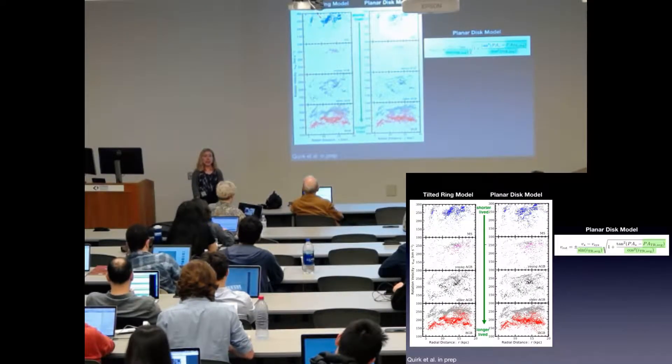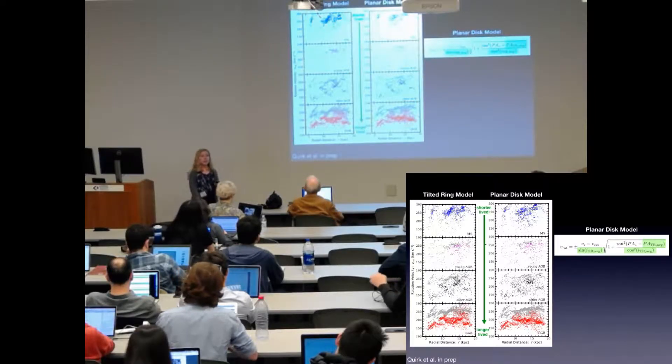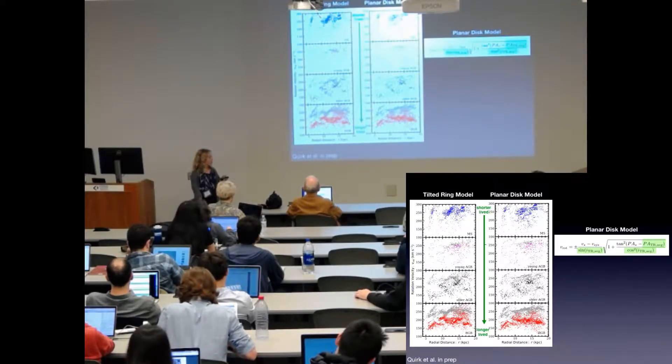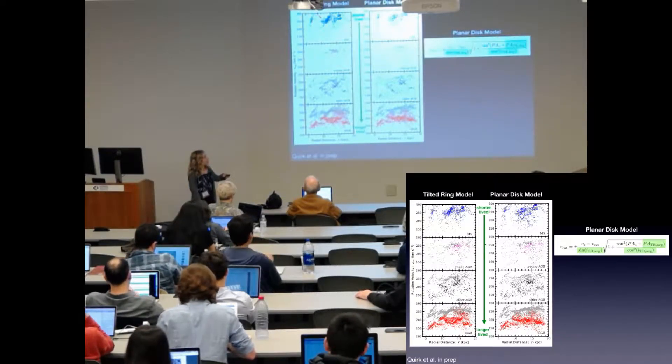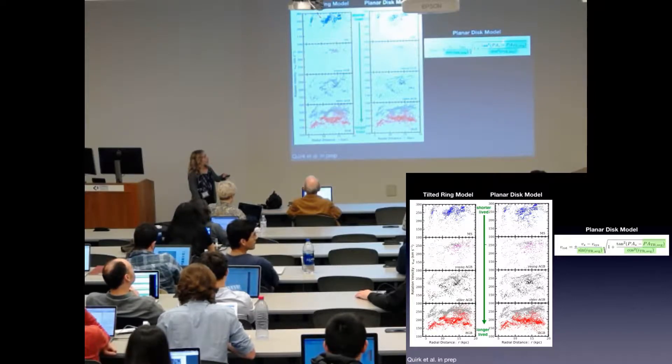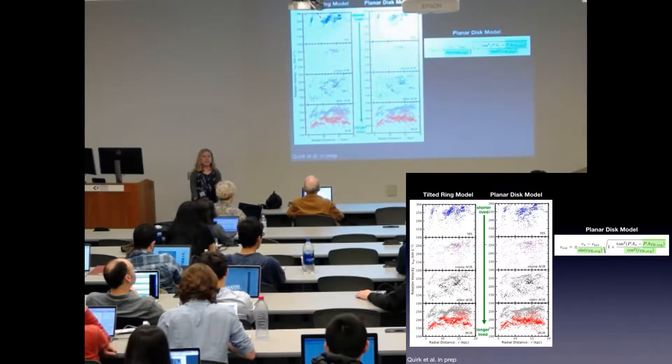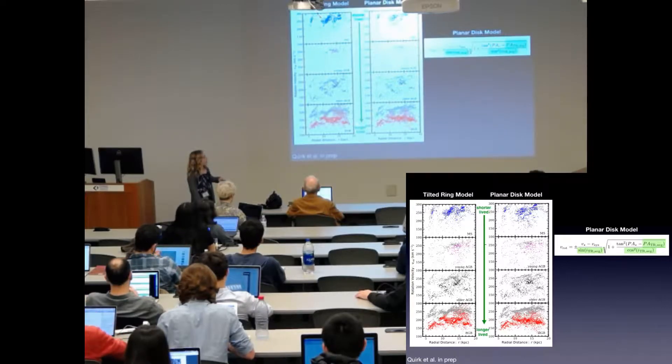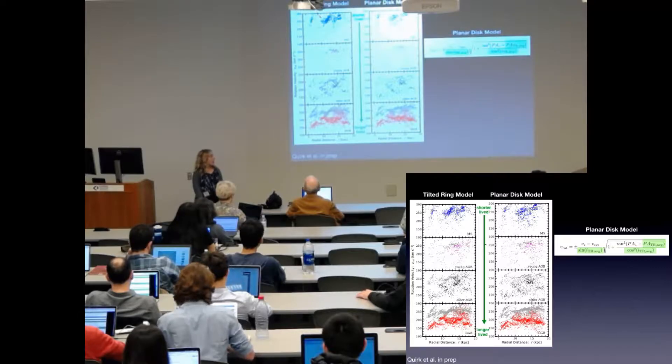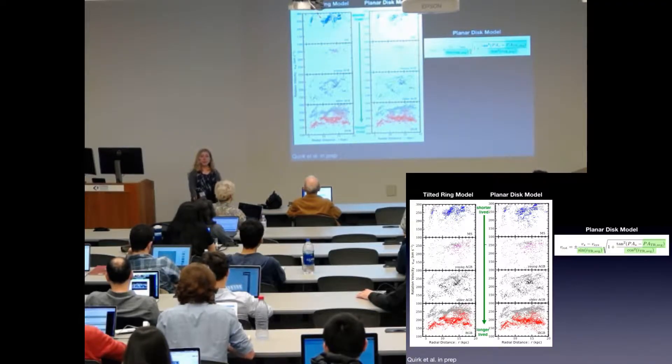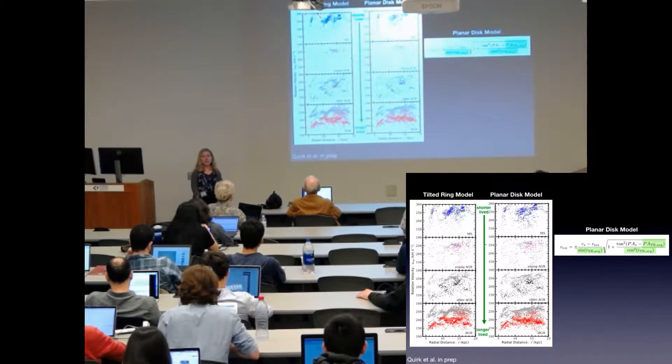Just for a sanity check, I've compared using this model to a simpler model, a planar disk model, where in the equation every star is given the same ring position angle and inclination angle. You can see the results of this model on the right of the figure shown here. You can see these rotation curves also don't look very great. So a simpler model does not adequately explain M31's complex geometry as well.